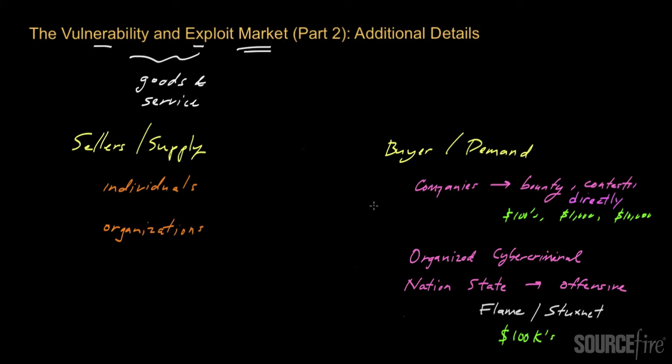If you look at the videos I made on vulnerabilities and exploits, especially the earlier ones, I did lay out a number of criteria for determining the severity of a vulnerability. It turns out that these criteria can also be applied to vulnerability pricing as well. For example, a vulnerability on a software application that is in wide use would be worth a lot more than a vulnerability on an application that's not so widespread. A vulnerability that provides the attacker with greater access to a particular resource is going to be worth a lot more than a vulnerability that provides restricted access.